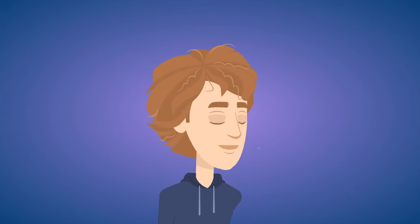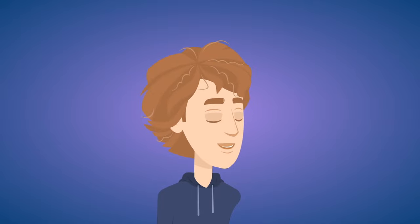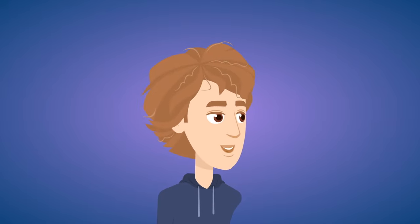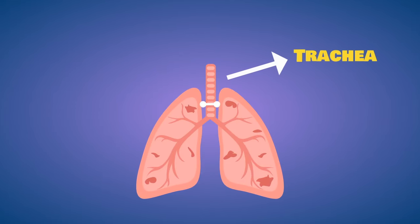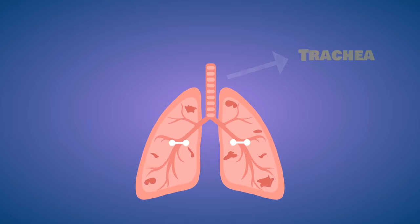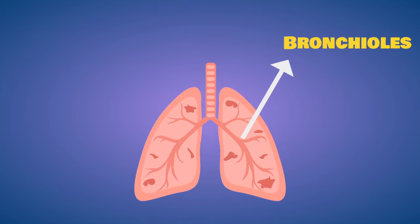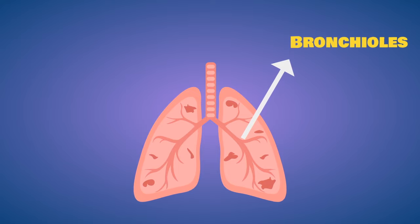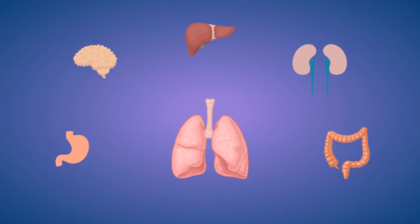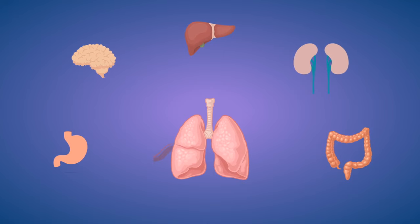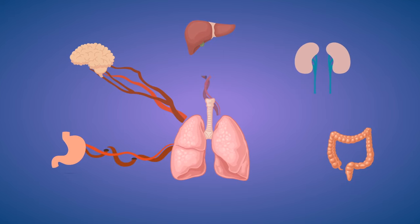When you breathe in, the air passes through the nostrils and travels through the trachea, also known as the windpipe. Then it travels into smaller branches of the trachea called bronchioles and reaches the lungs. From here the oxygen gets diffused into the blood and reaches the different parts of the body.